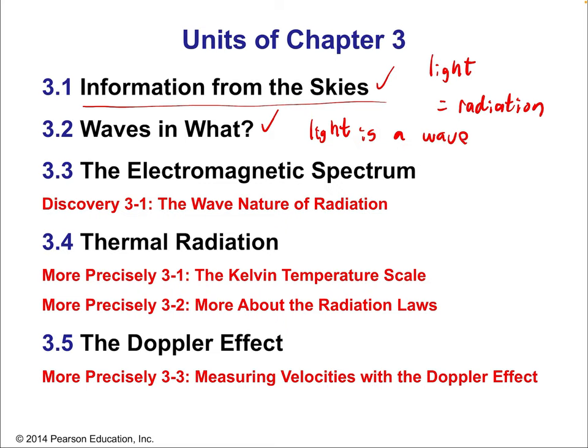Then we want to talk about the electromagnetic spectrum, because it turns out that visible light is only a very small part of the overall spectrum of light. How is it that a radio wave and the color green are part of the same thing? Well, there's a fundamental connection there. Then we'll talk about thermal radiation, because there's a really important tie-in between the temperature of an object and the color light that it emits.